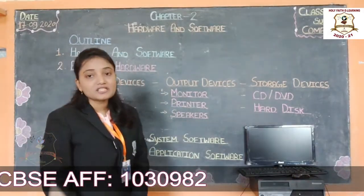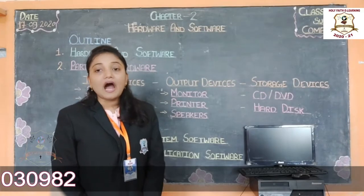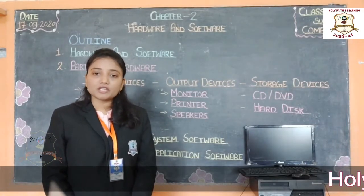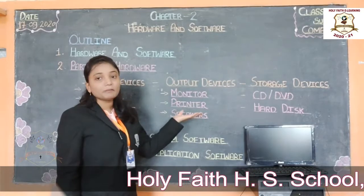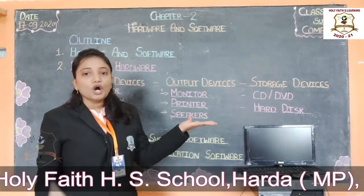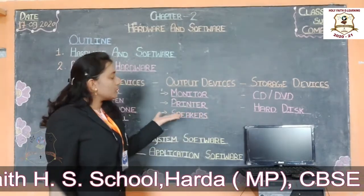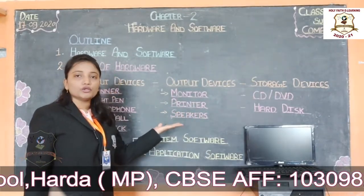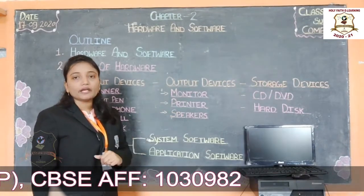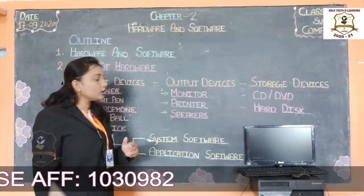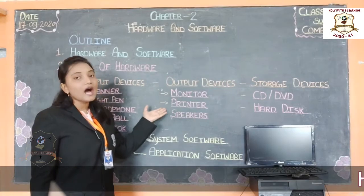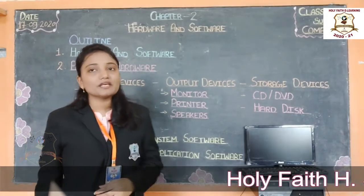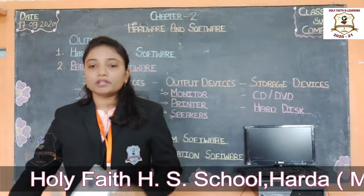Next one is the printer. A printer prints the information from a computer onto a paper. The printed copy is known as the hard copy. Look here — this is a printer.